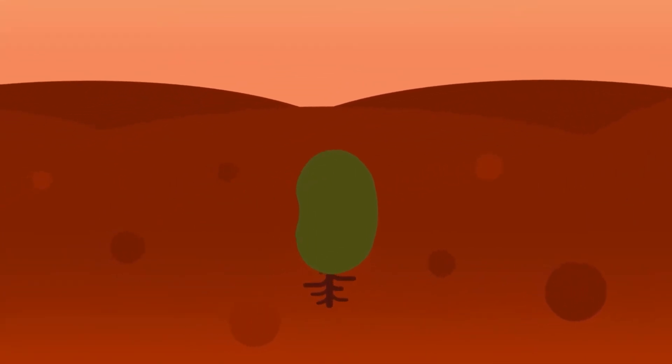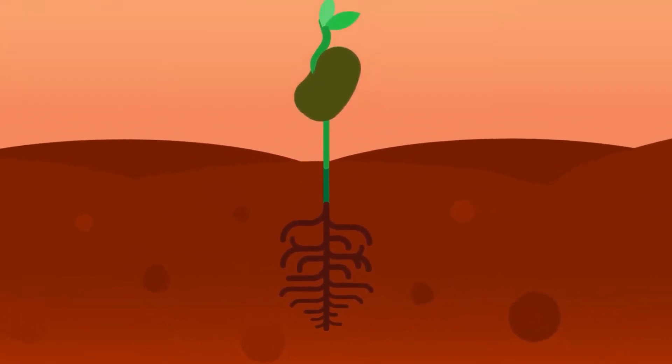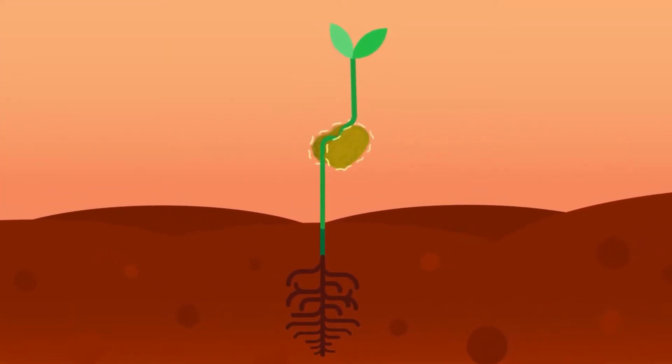In the case of epigeal germination, the cotyledons are carried above the ground, for example, sword bean seed.